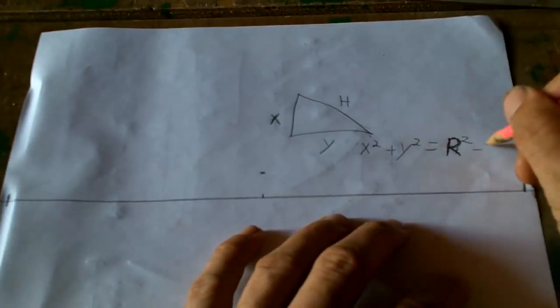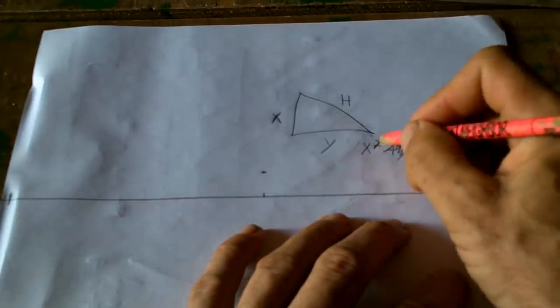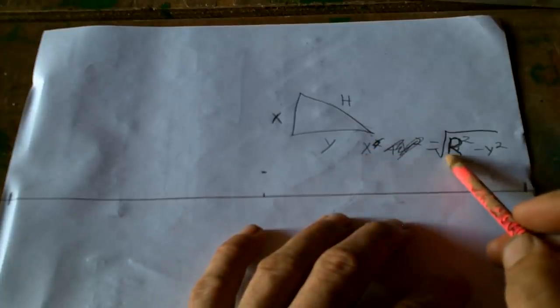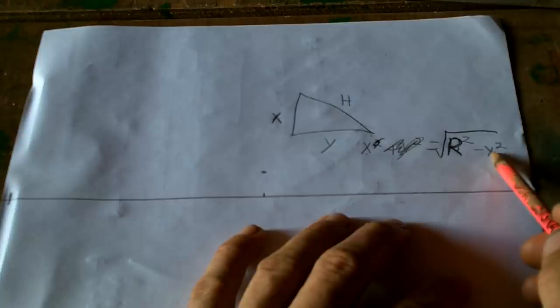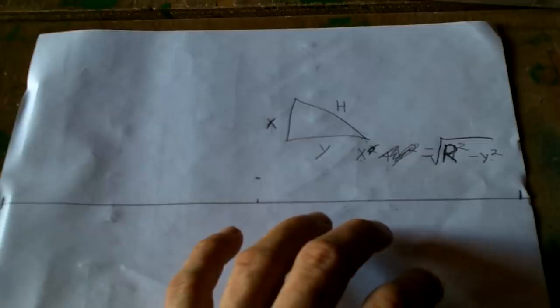I can just do it right now. Minus y squared, square root of that. So x equals r squared minus y squared, square root of that. My calculator should be able to handle that.